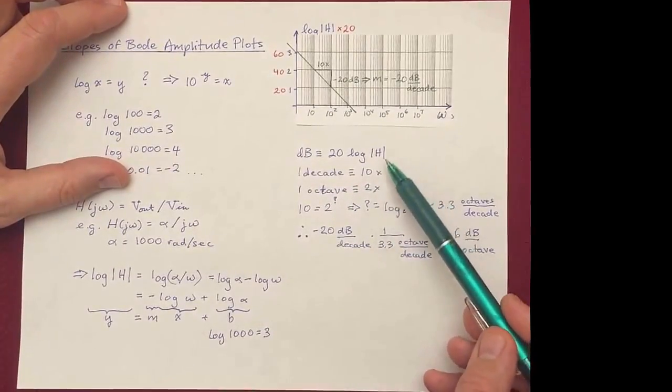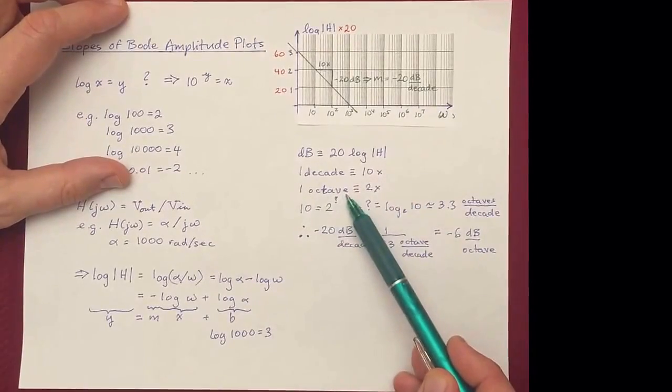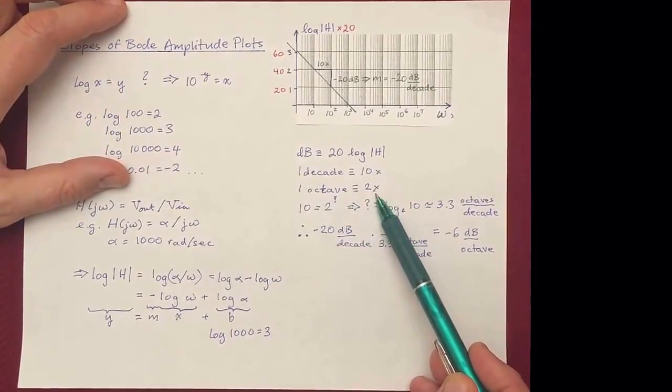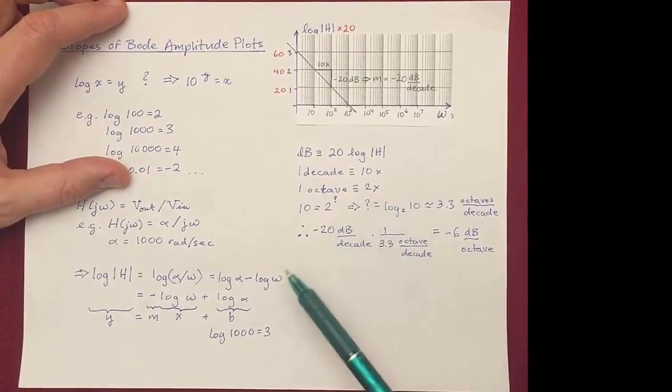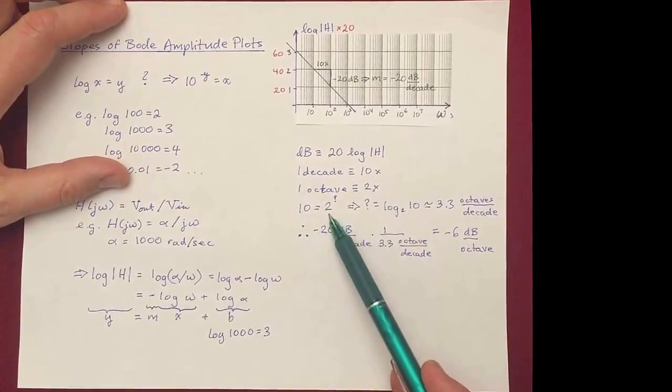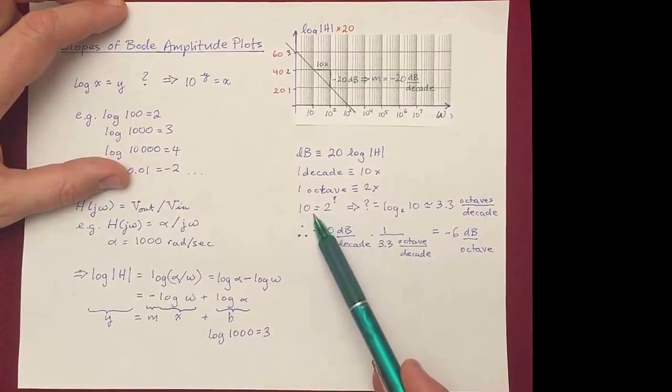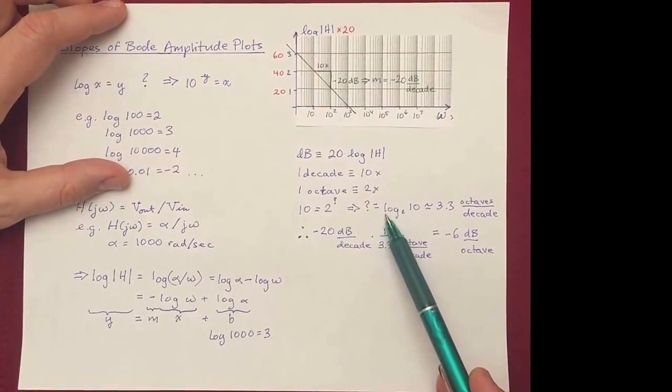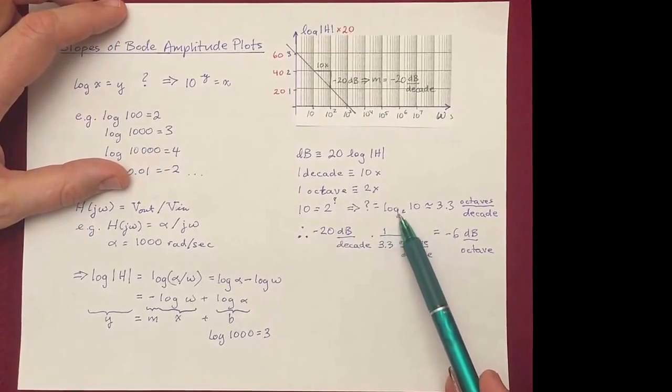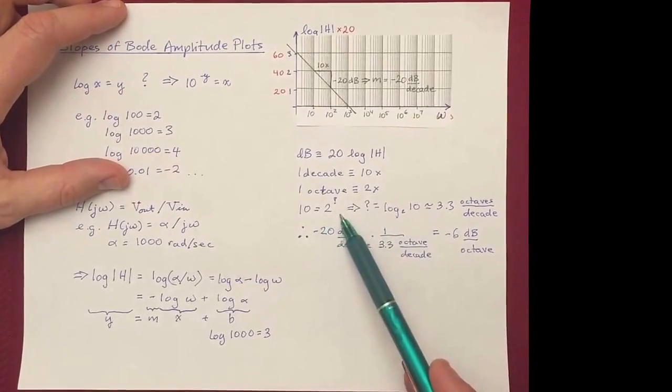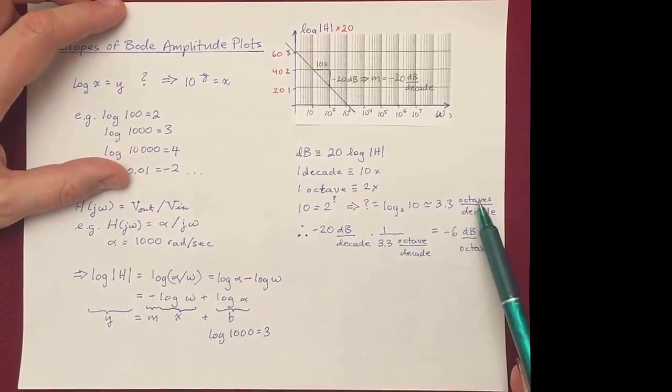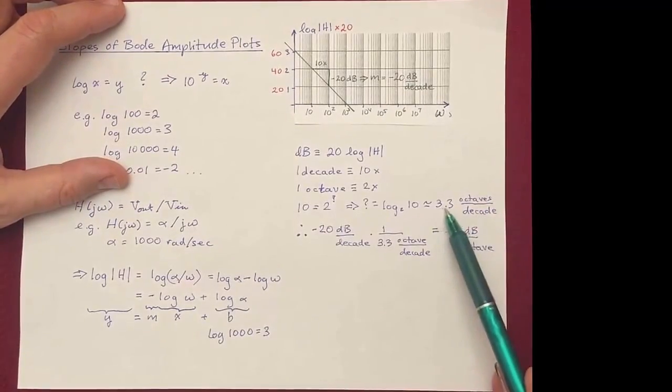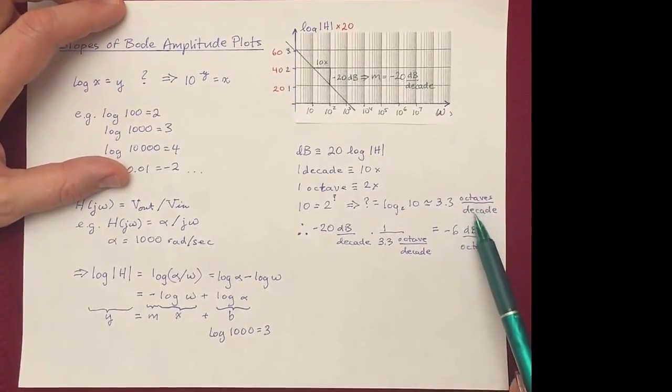Now, sometimes you'll see people using units of octaves for frequency instead. An octave is just multiplying it by a factor of 2, and you can convert between decades and octaves simply by thinking, how many factors of 2 does it take to fill in a factor of 10? Well, you can figure that out. You can calculate that by taking the log base 2 of 10, just inverting this equation, which turns out to be 3.3, and the units of that would be octaves in each decade. So 3.3 factors of 2 fit into one factor of 10.